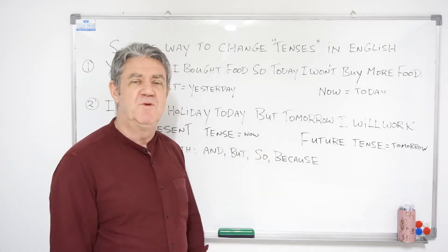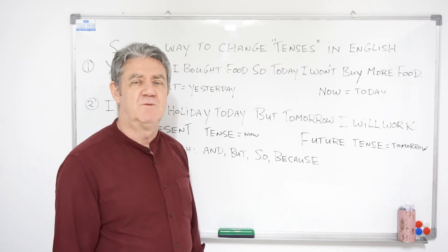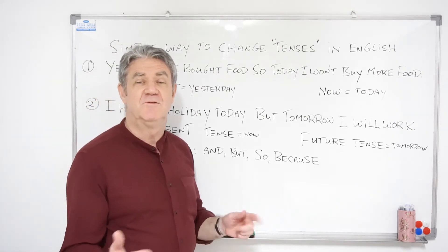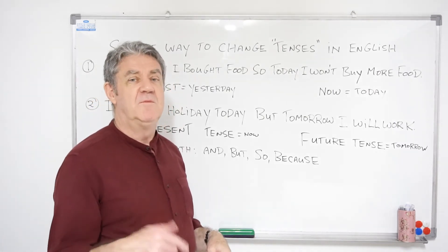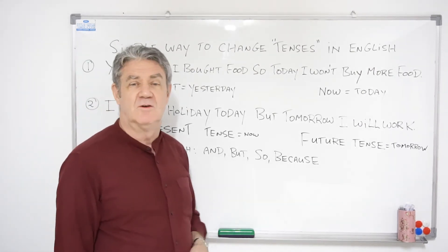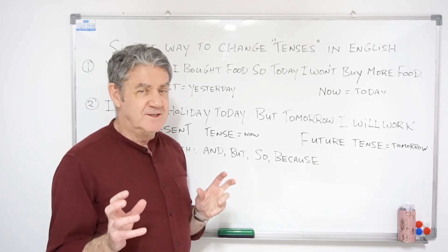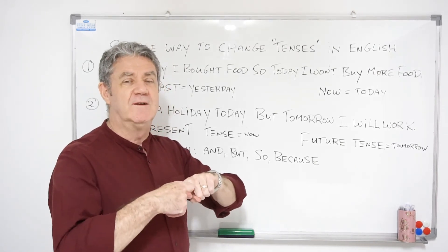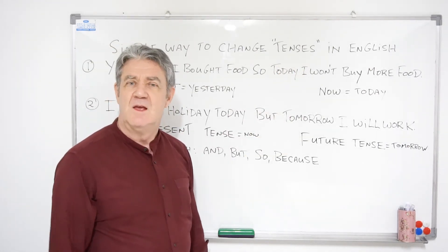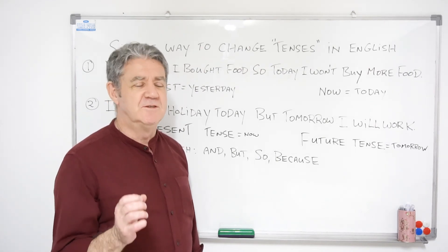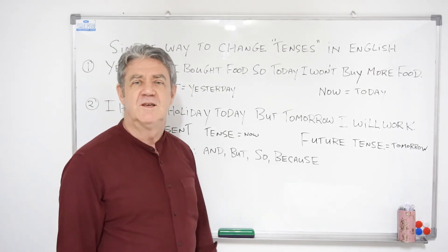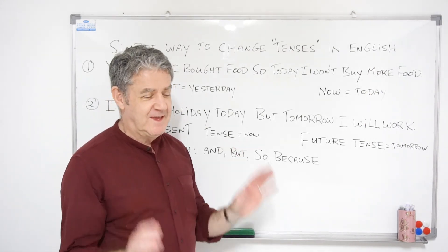This is a very simple thing but some students really have trouble with when to change the time. And you can use this for any time — from the past to the future, or the future back to now or back to the past. Use these words: and, but, so, because — any words that do this job of joining — when you want to change the tense in an English sentence. I hope that really helps you. It's very easy using these four words and words like them. Okay for now, catch you later.